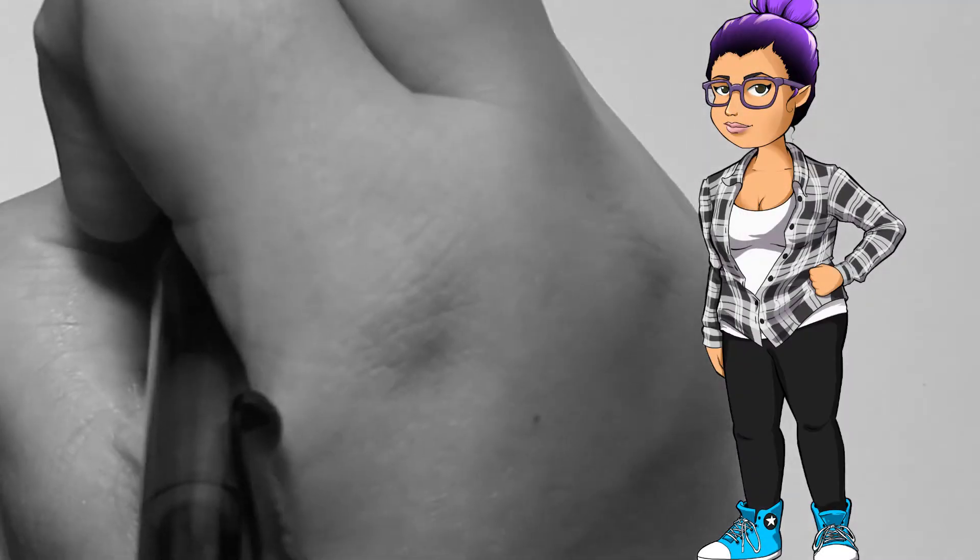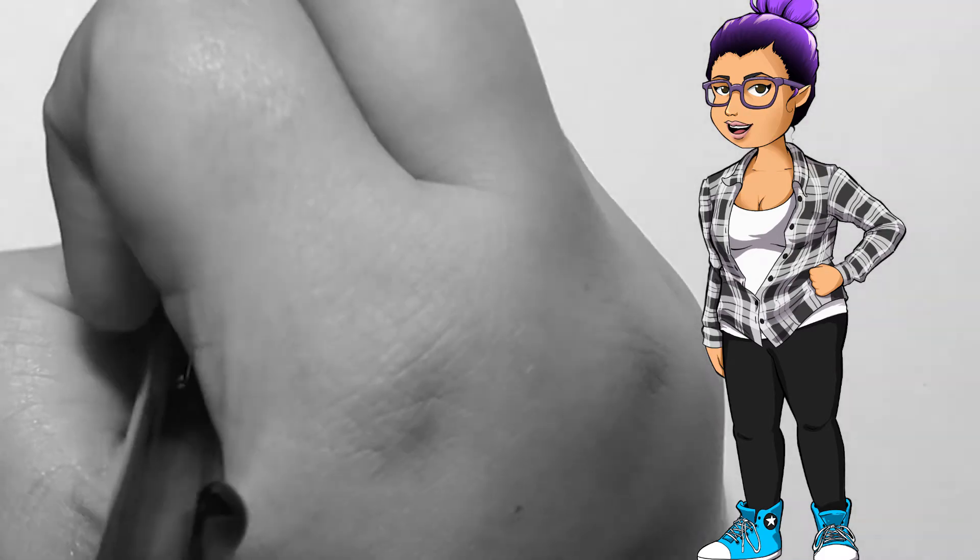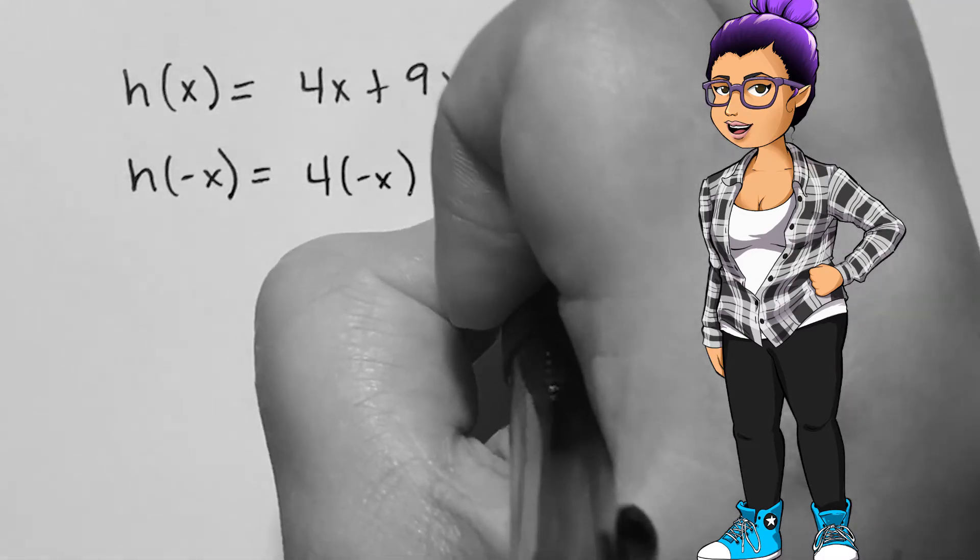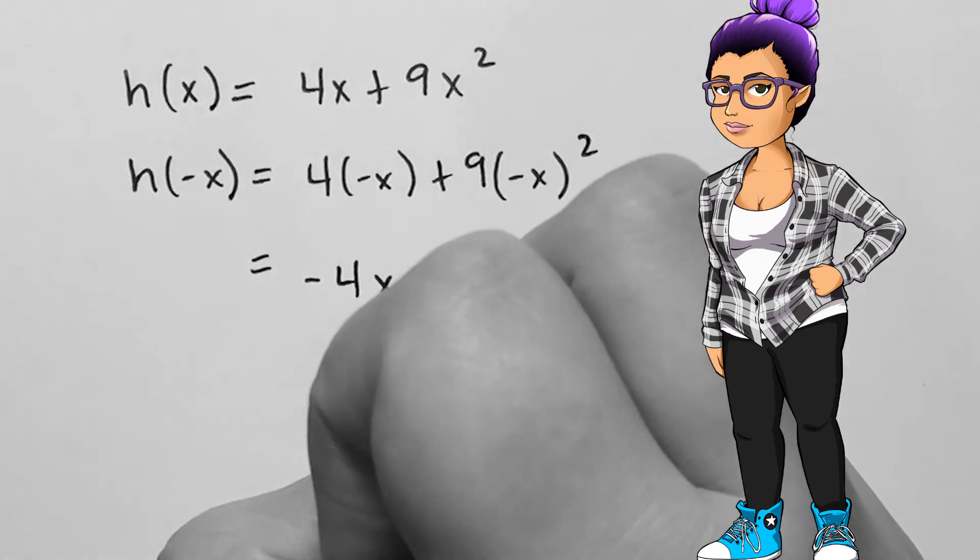Given h of x equals 4x plus 9x squared, I plug in negative x and get neither h of x nor negative h of x. This means that the function is neither even nor odd.